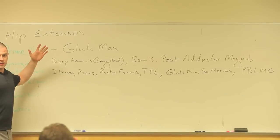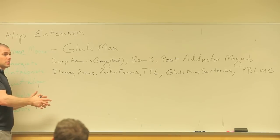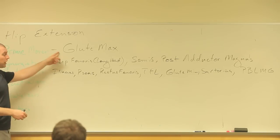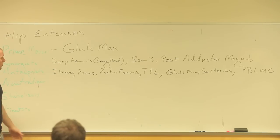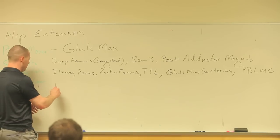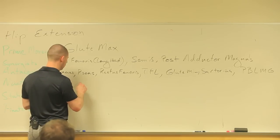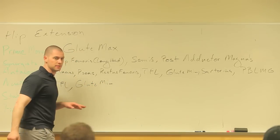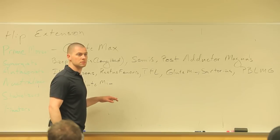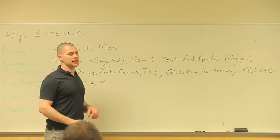Neutralizers: what are we trying to neutralize? We're trying to get some internal rotation activity, because my glute max wants to do extension and external rotation. So who are my internal rotators? TFL definitely, glute min, and anterior fibers of gluteus medius if you want to write it down.